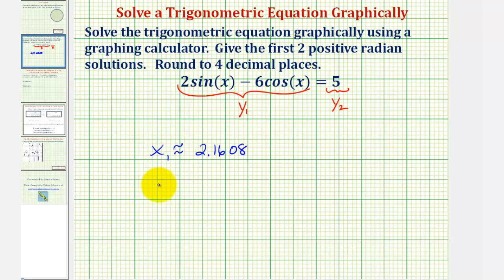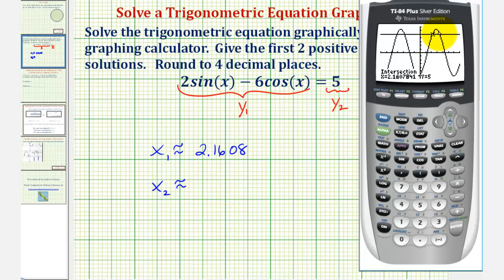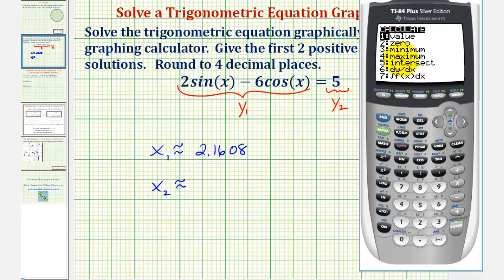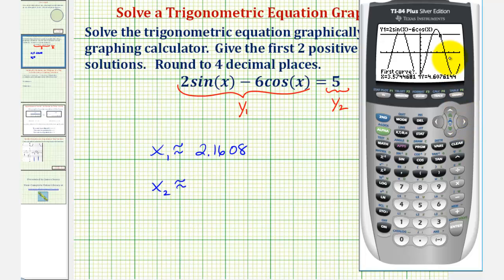And now we'll find x sub two, the second positive radian solution. Would be the x coordinate of this point of intersection. So we'll press second trace again for the calculation menu. Option five for intersection. And now we'll move the cursor closer to the next point of intersection. Which would be somewhere in here.